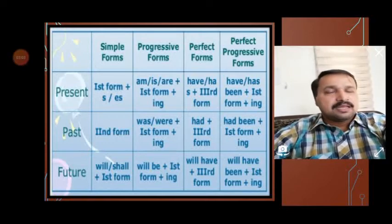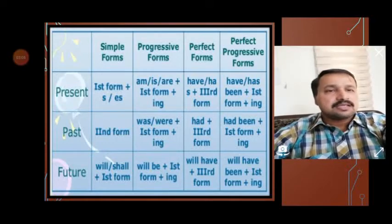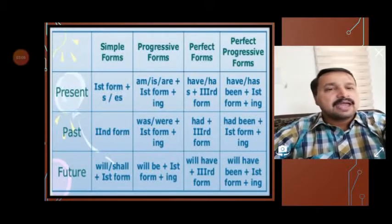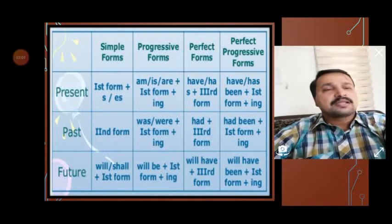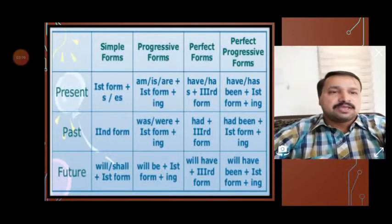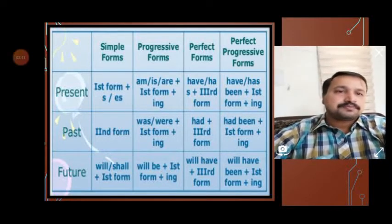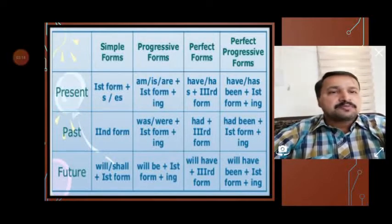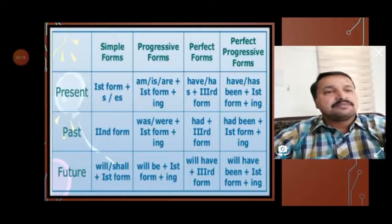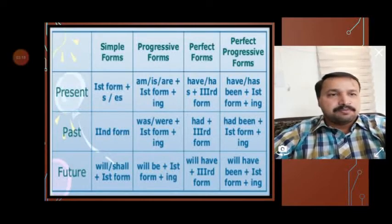Then past perfect tense is formed with 'had' plus the past participle form of the verb, or V3, the third form. Then past perfect progressive is formed with 'had been' plus the '-ing' form of the verb.